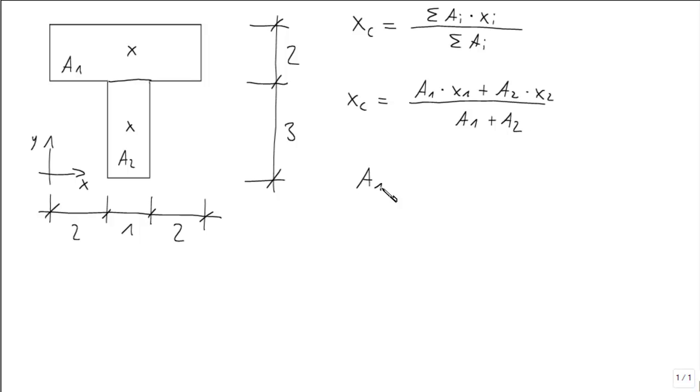Area 1 is 5 times 2. Area 2 is 1 times 3. And the distance of both is 2 plus the half of 1, so it's 2 and a half.